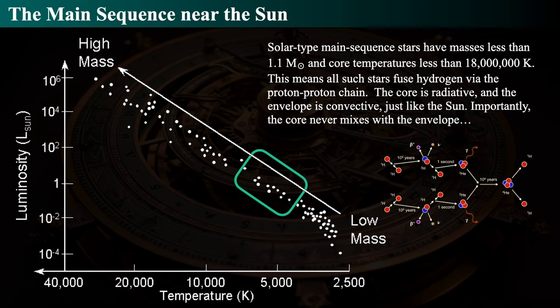For solar-type mass stars — less than 1.1 times the mass of the sun — core temperatures are below 18 million Kelvin, so the proton-proton chain is the dominant energy production mechanism. The core uses radiative energy transfer, meaning the temperature gradient isn't as steep. But the outer layers are cooler, so you get convective flow at the surface, which is why stars like the sun show granulation and convective cells.